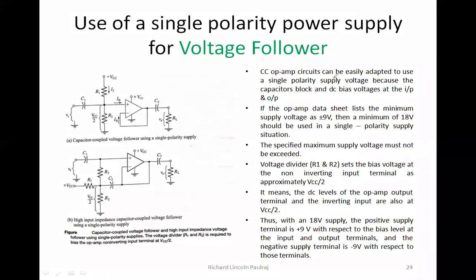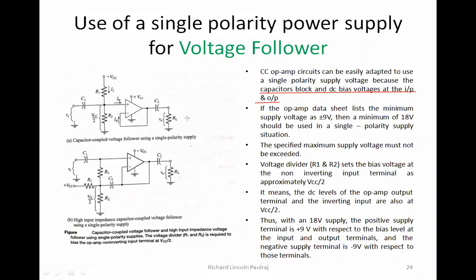Capacitor-coupled op-amp circuits can be easily adapted to use a single polarity supply voltage because the capacitors block DC. Capacitors always block DC voltages at the input and output. Wherever you have capacitors placed at the input side, the DCs are blocked, and if placed at the output side, DCs at the output are blocked. When I say capacitor coupled, keep in mind you will have capacitors at both the input side and output side — termed as C1 and C2.